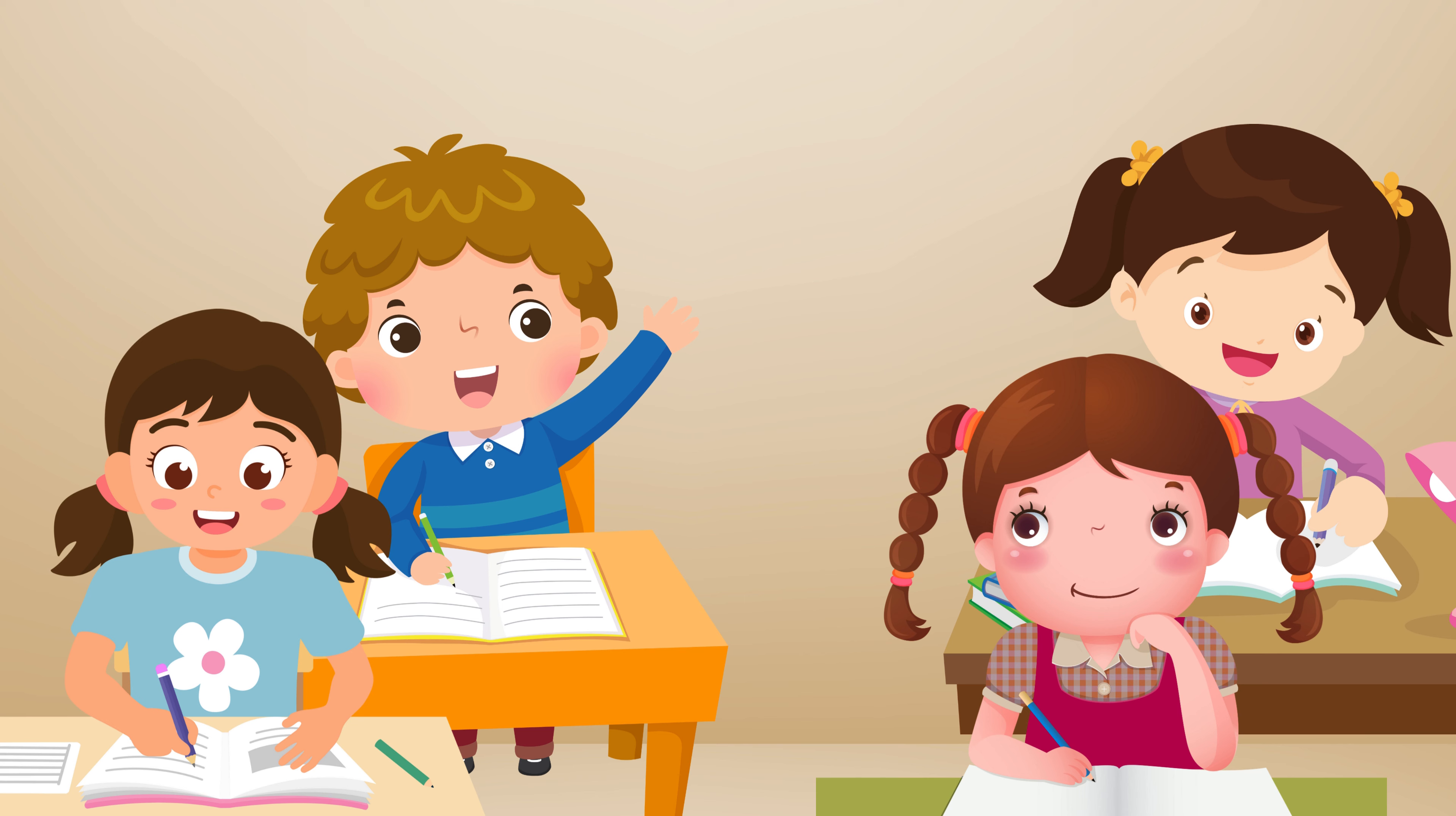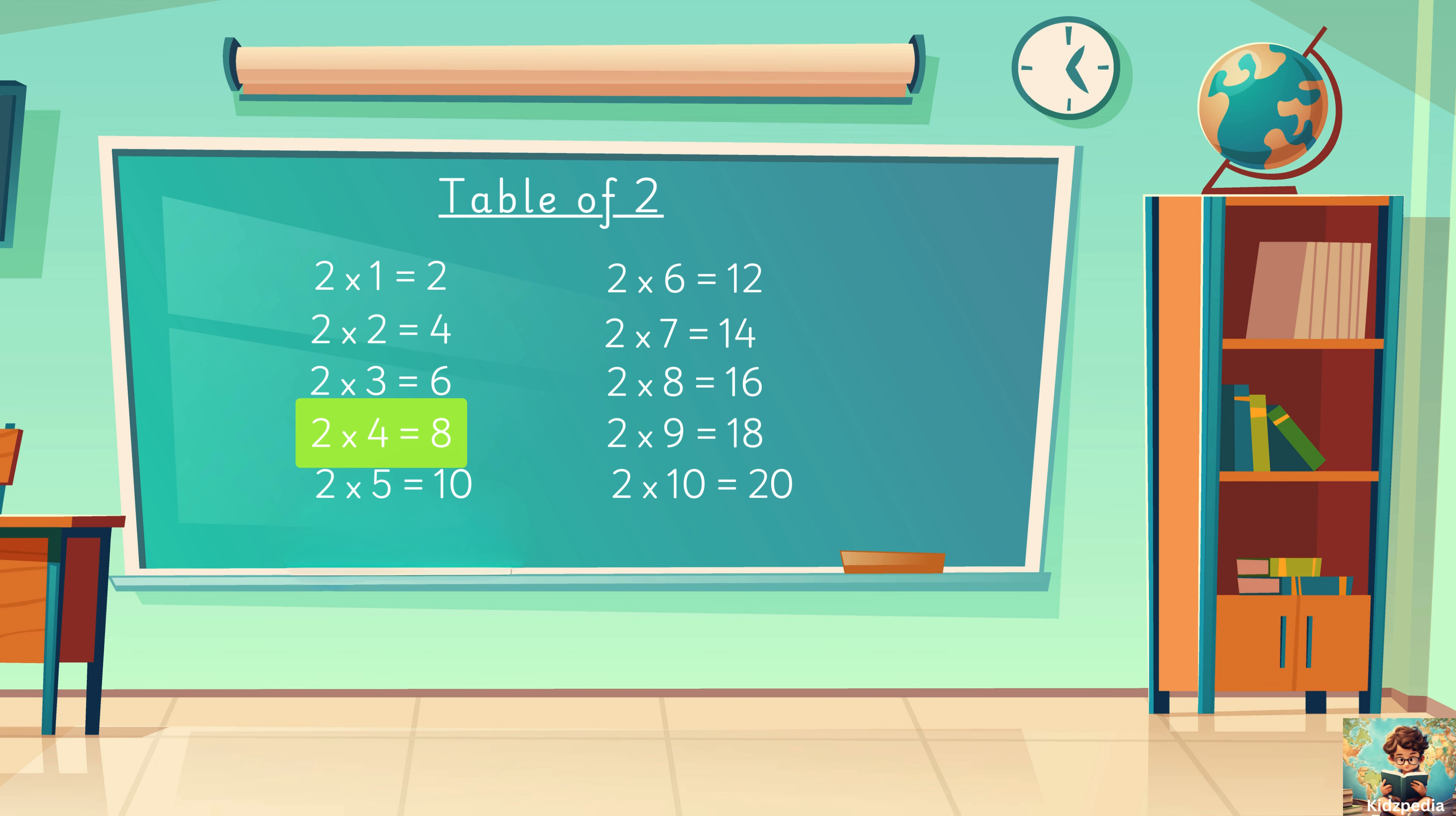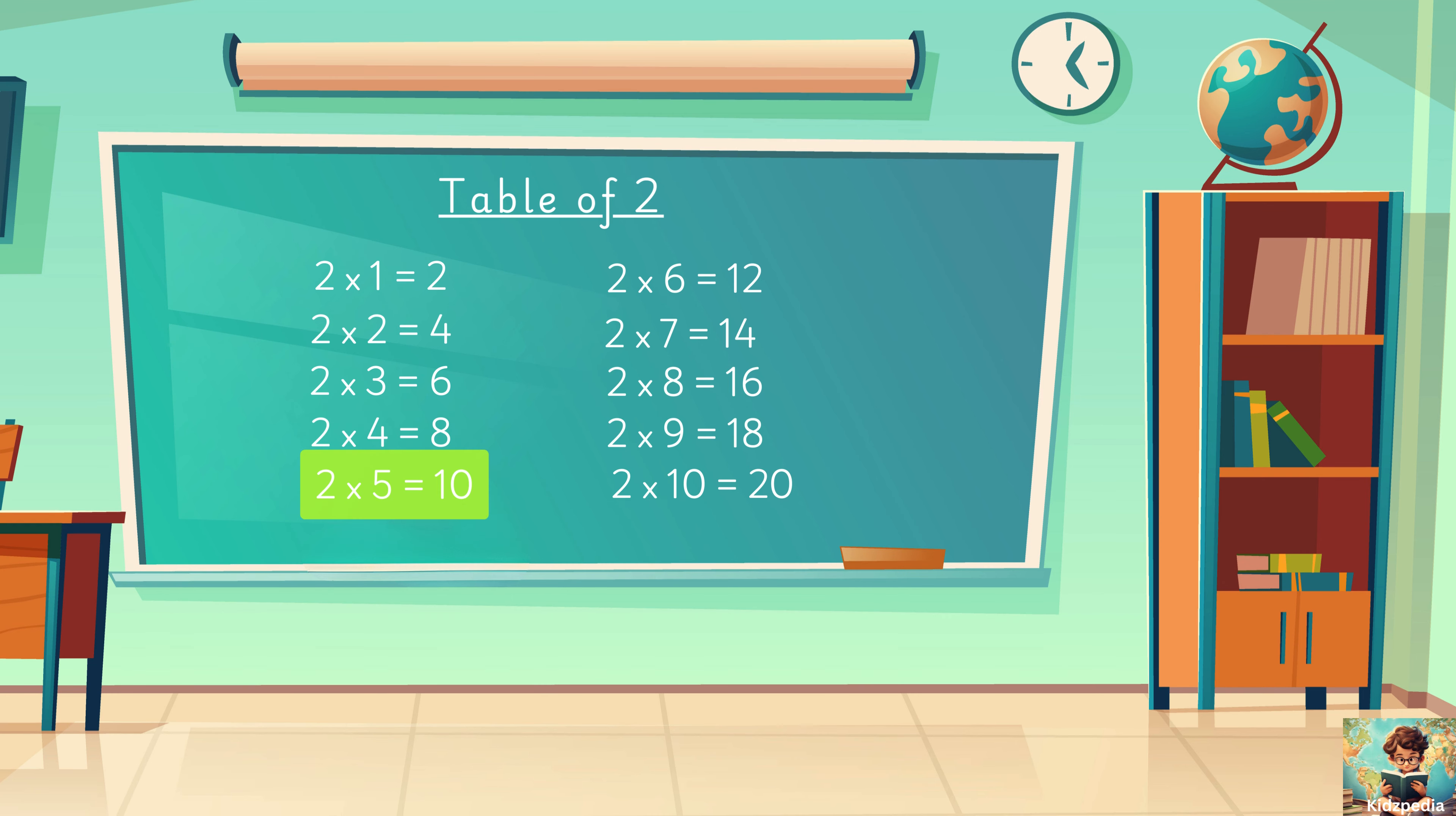Can we say it together now? Two ones are two, two twos are four, two threes are six, two fours are eight, two fives are ten.